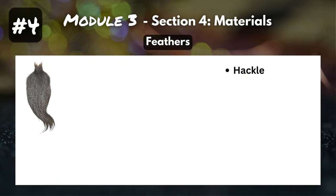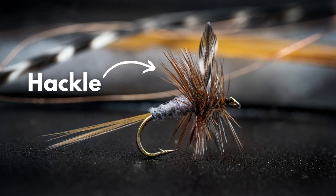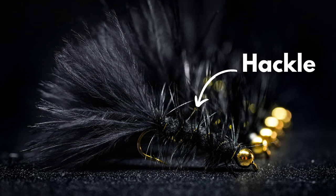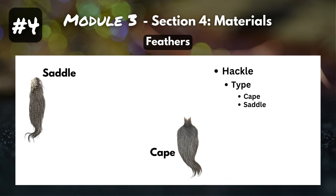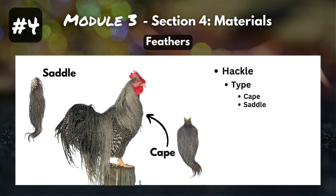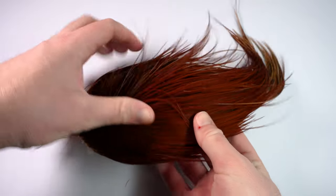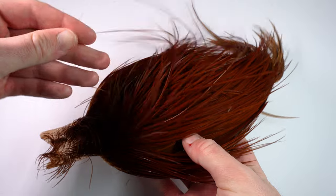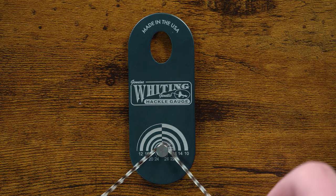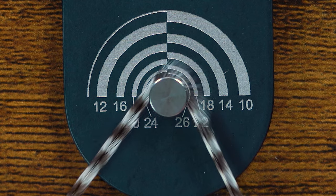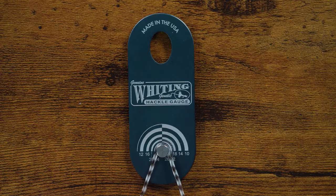First on our list is hackle. Hackle is so important to fly tying it deserves a spotlight of its own. It's used for dry flies, nymphs, and even streamers. The two most common types of hackle are capes and saddles. If you were to look at a rooster, the cape starts near the head and comes down the back, and the saddle sits just below the cape. What makes them different is the cape has a larger range of sizes compared to a saddle. If you pick up a cape, you'll likely find feathers you could use for really small dry flies all the way up to something for a streamer. Saddles don't vary much in size — if you find one feather in the 14 to 16 range, that's going to be very similar to the rest of the feathers in that saddle.